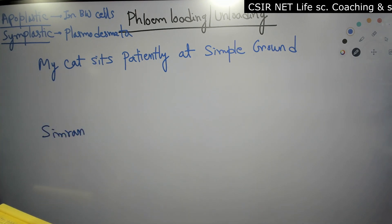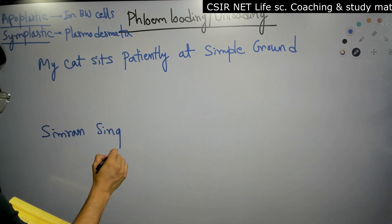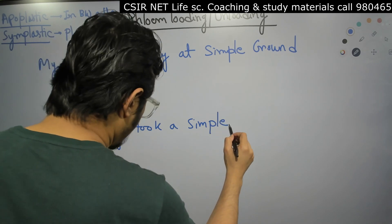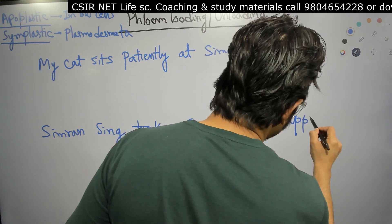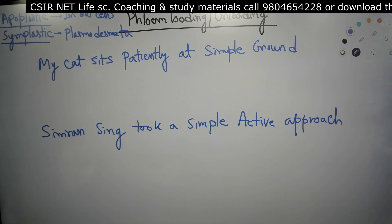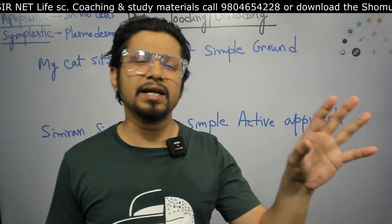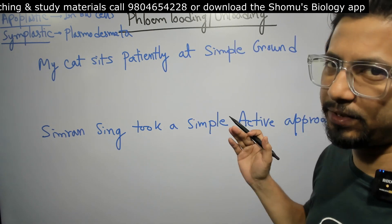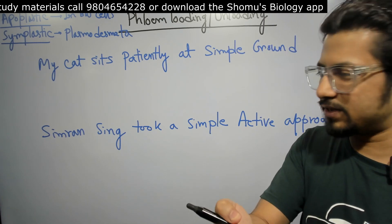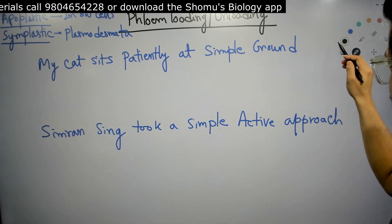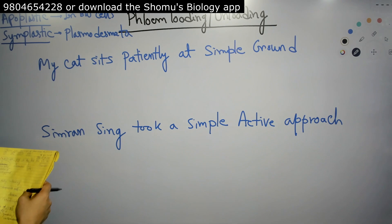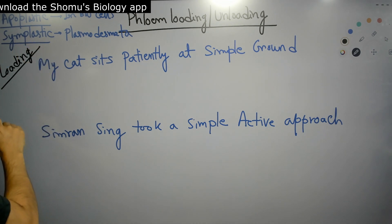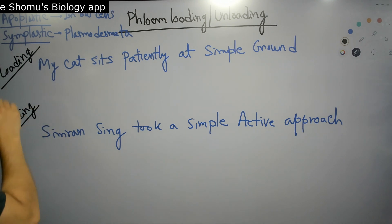The second sentence is: 'Simran Singh took a simple active approach.' Imagine Simran Singh as a colleague of yours who took a simple active approach to solving a question. These are two separate, unrelated sentences. The first sentence gives us information regarding phloem loading, and the second gives us information regarding phloem unloading.